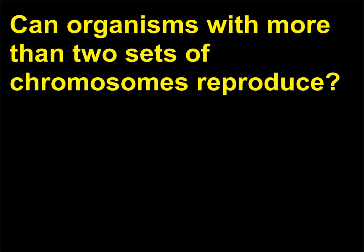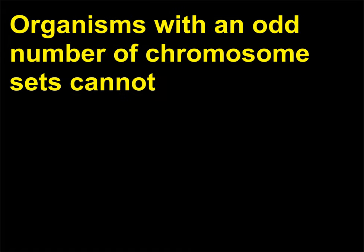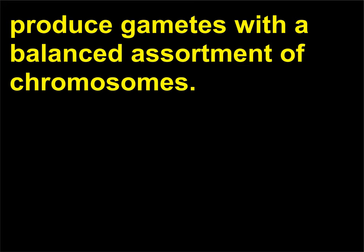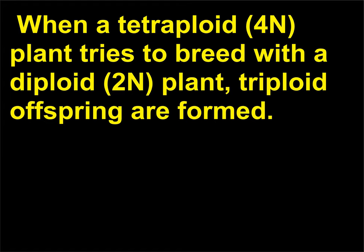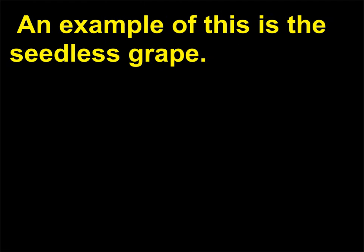Can organisms with more than two sets of chromosomes reproduce? Organisms with an odd number of chromosome sets cannot produce gametes with a balanced assortment of chromosomes. Polyploidy is very common in plants, with 30 to 70 percent of today's angiosperms thought to be polyploid. When a tetraploid (4n) plant tries to breed with a diploid (2n) plant, triploid offspring are formed — an example of this is the seedless grape.